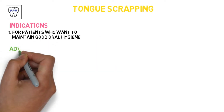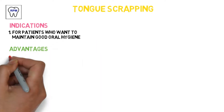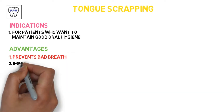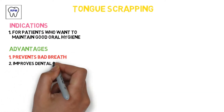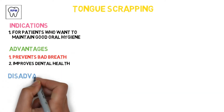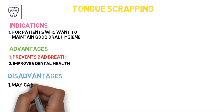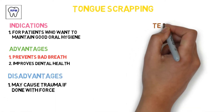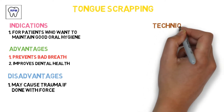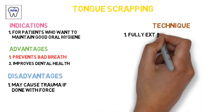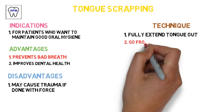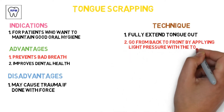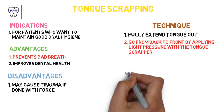Tongue scraping. Indications: for patients who want to maintain good oral hygiene. Advantages: it prevents bad breath and it improves dental health. Disadvantages: it may cause trauma if done with force. Technique: Step 1 — extend tongue out fully, go from the back to the front of the tongue by applying light pressure with the tongue scraper.